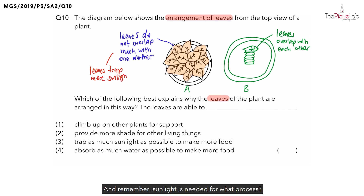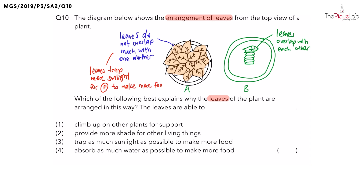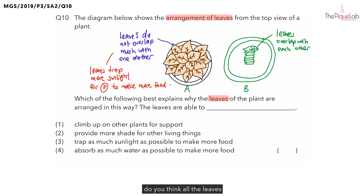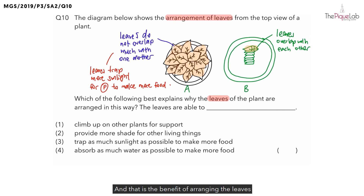Remember, sunlight is needed for photosynthesis in order for the plant to make more food. However, if you look at the leaves for plant B, not all the leaves are able to receive sunlight — only the leaves on top will be able to receive sunlight. So it is very clear that between plant A and B, the leaves of plant A can receive more sunlight. And that is the benefit of arranging the leaves as seen in plant A.